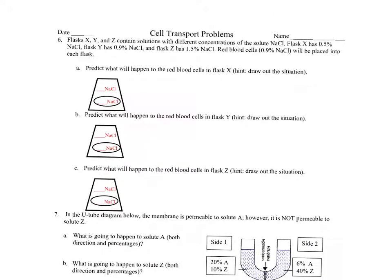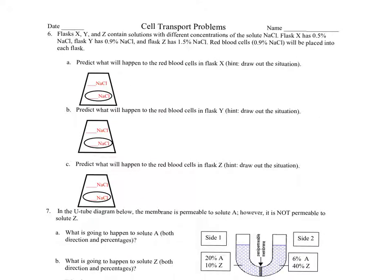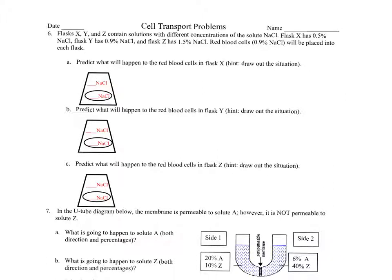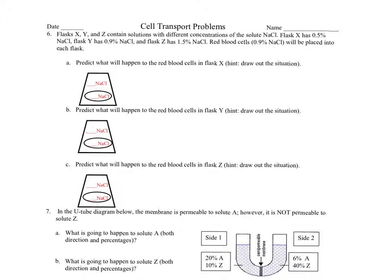Flask X, Y, Z each contains solutions of different concentrations of sodium chloride. Flask X has 0.5% NaCl, Flask Y has 0.9% NaCl, Flask Z has 1.5% NaCl. Red blood cells have 0.9% NaCl and will be placed into each flask. How are you going to answer a question like this? You have to draw it out.